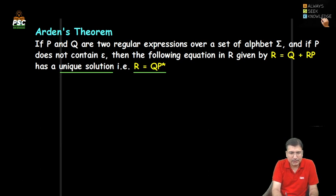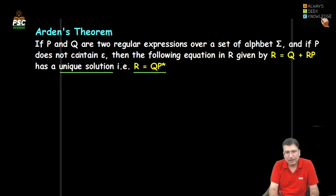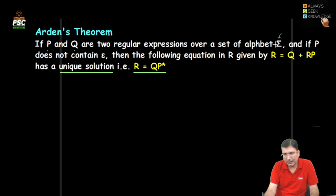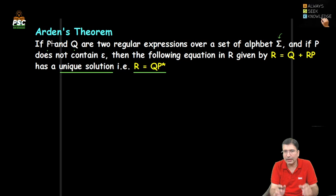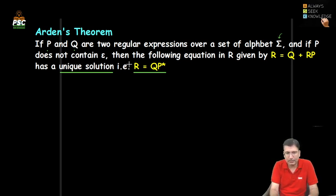Arden's theorem states: assume there is an equation where P is a regular expression and Q is also a regular expression over the set of alphabet — sigma, not epsilon. So if these two regular expressions are defined over this alphabet sigma, and if P does not contain any null value — P does not generate null — that is the important condition you need to remember.